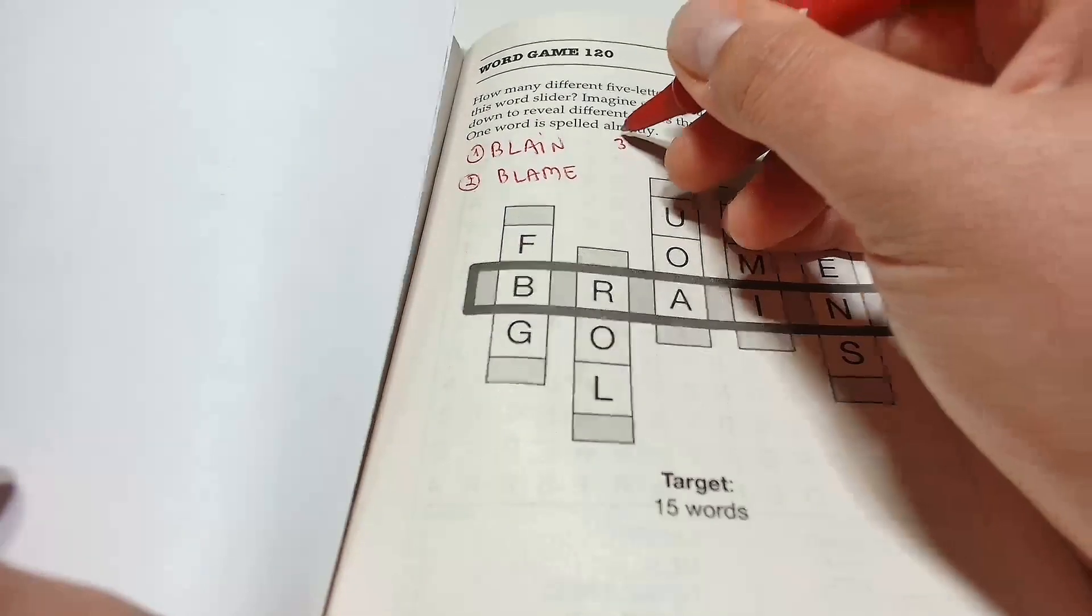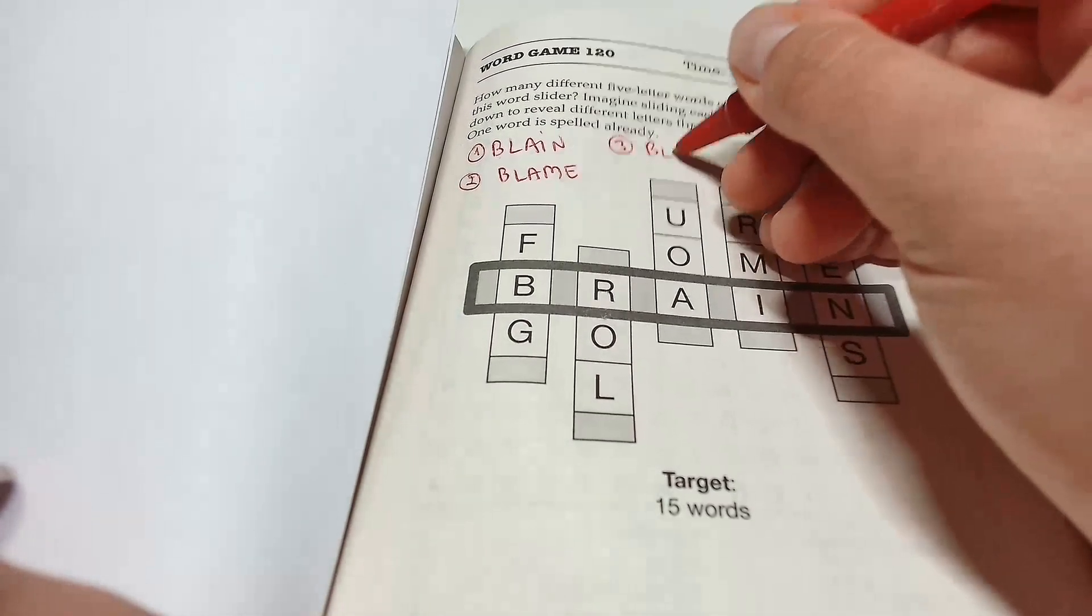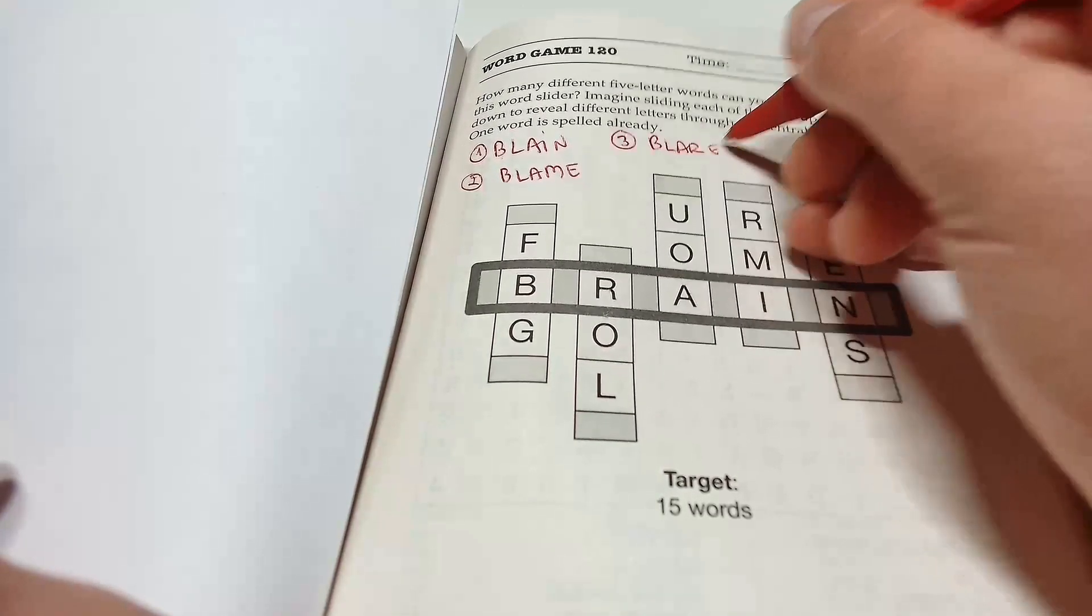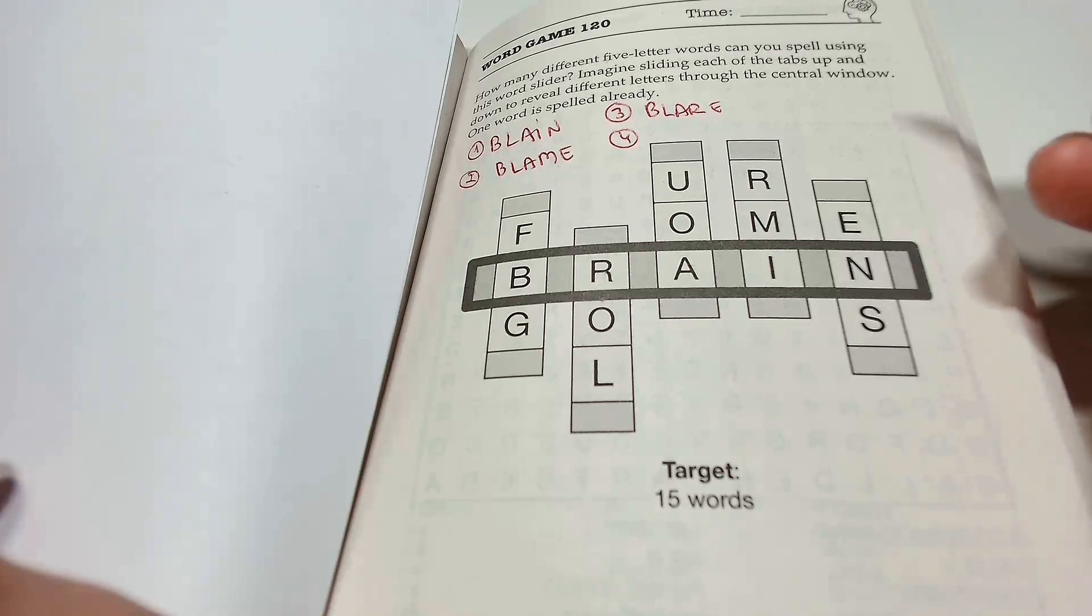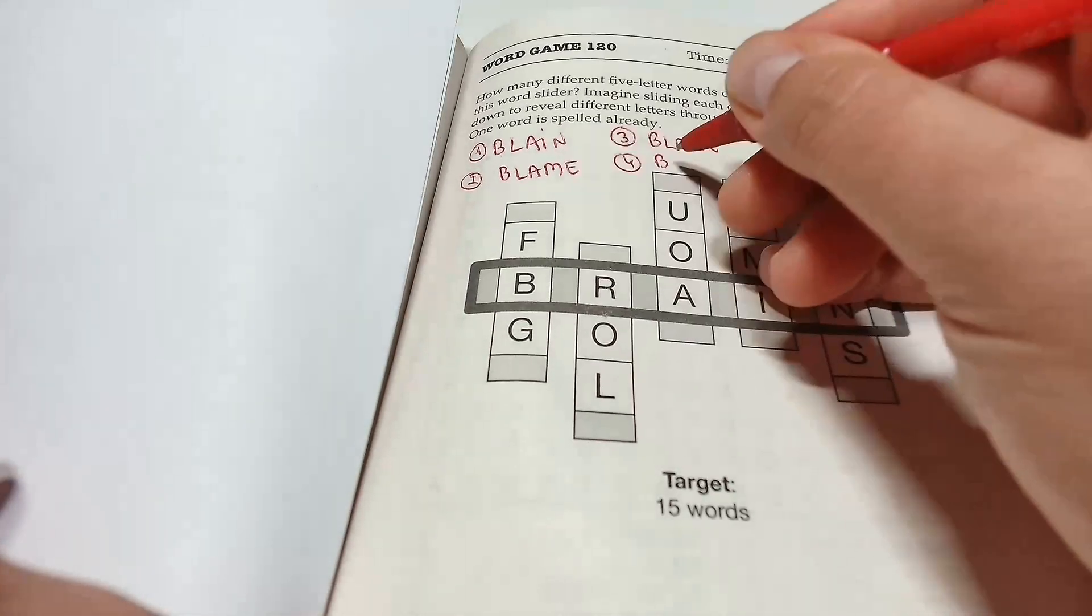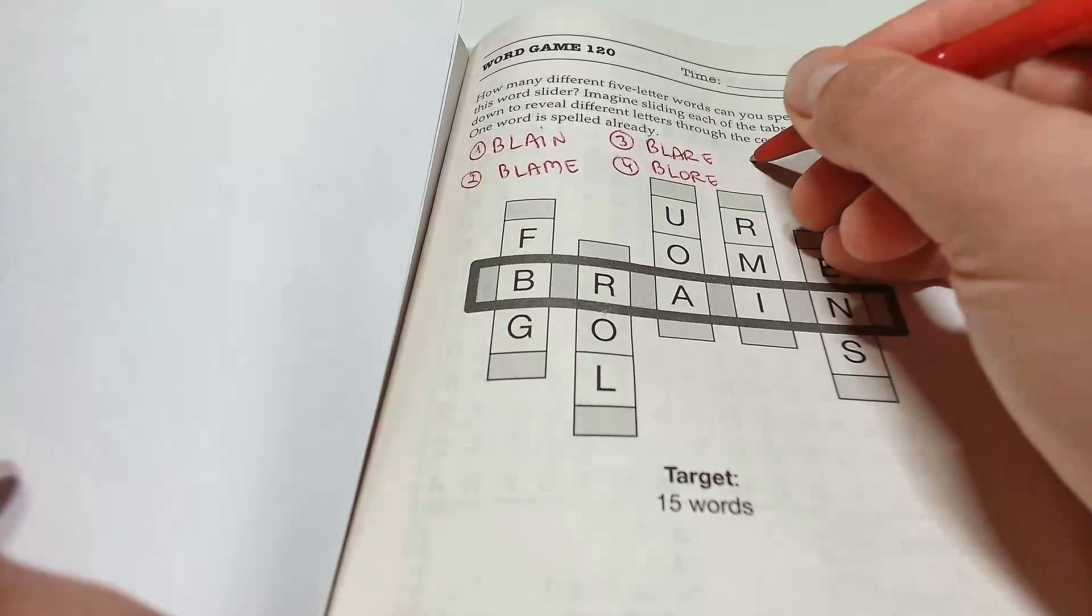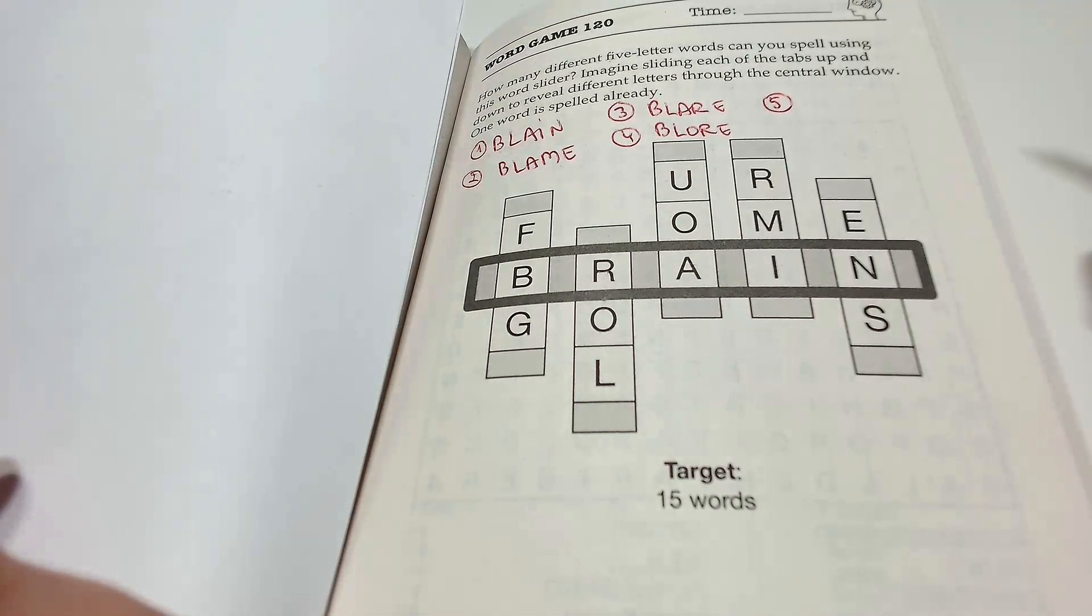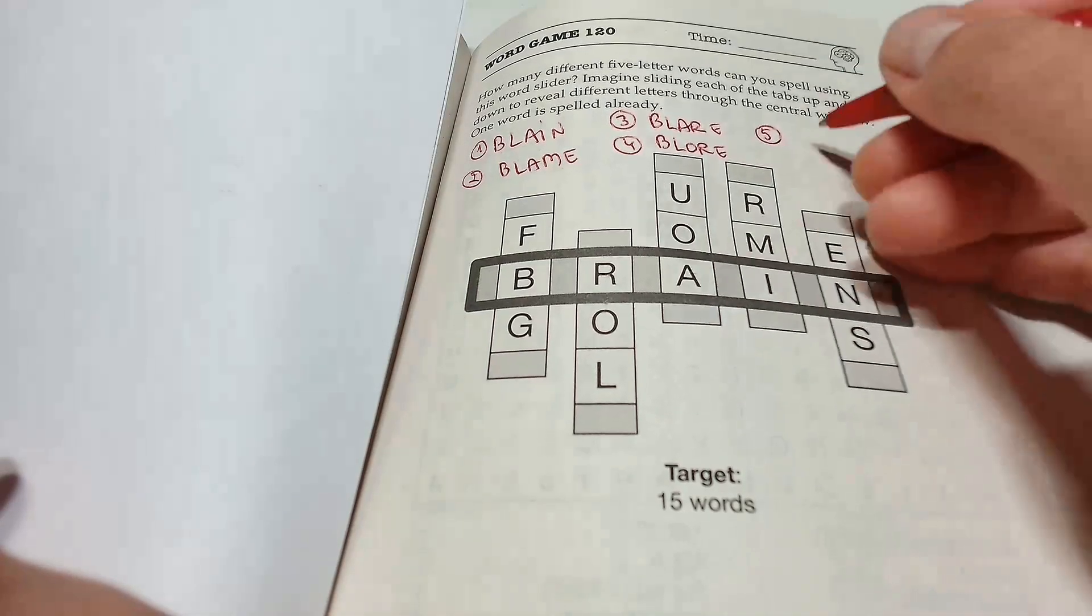Word number three, blare. Word number four, blore. Look these words up in a dictionary please. Next one, bloom.